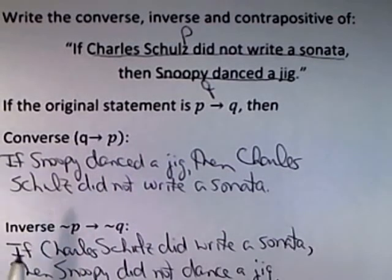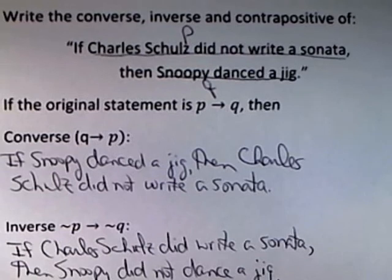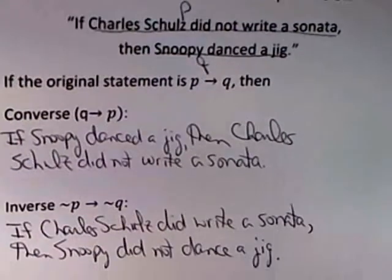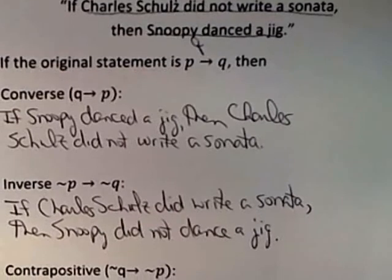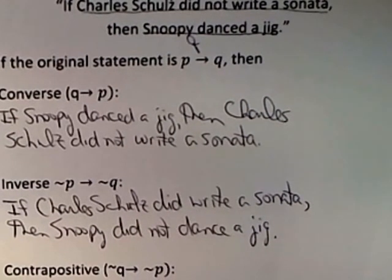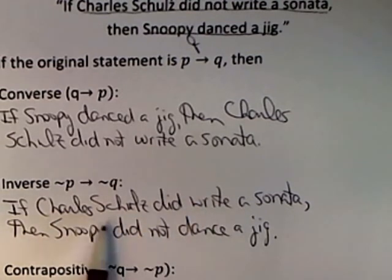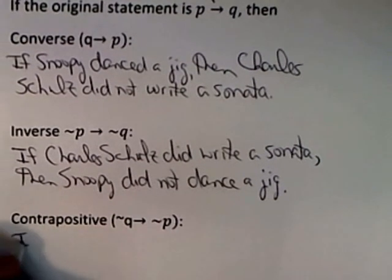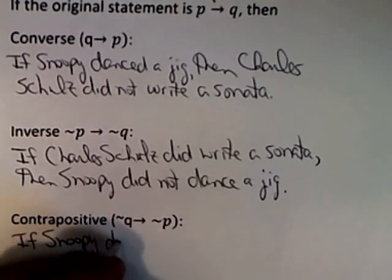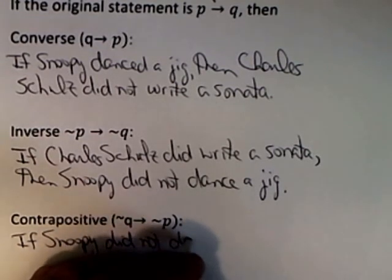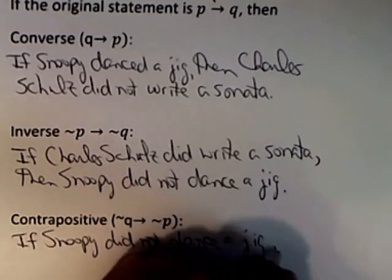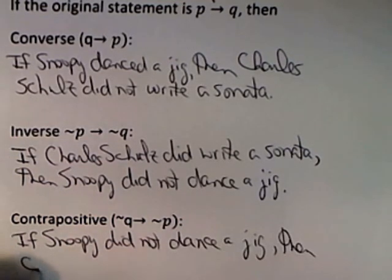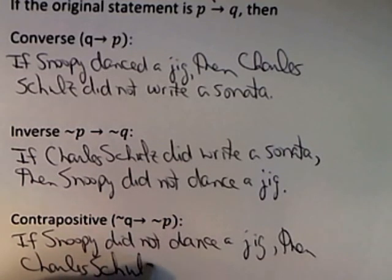With the converse, we switch P and Q. For the inverse, we negate P and Q. And finally, the contrapositive does both — it switches the P and the Q and negates them. We've already negated them, so all we need to do now is take the negated ones and switch them. So finally we get: if Snoopy did not dance a jig, then Charles Schulz did write a sonata.